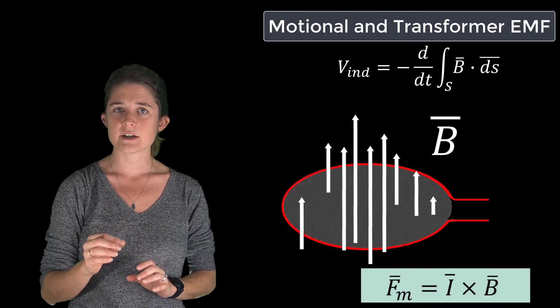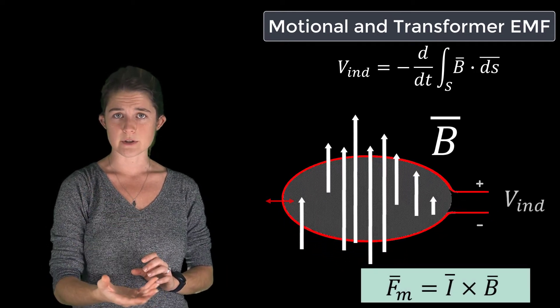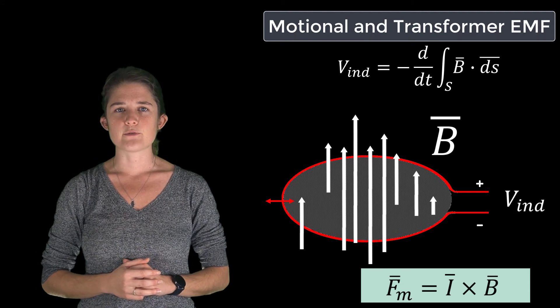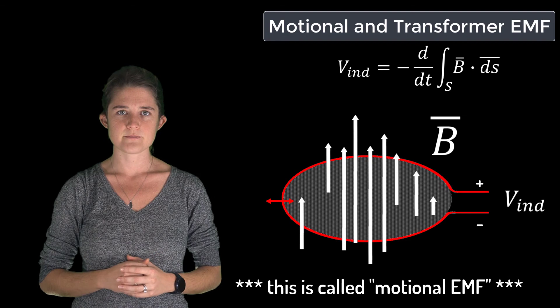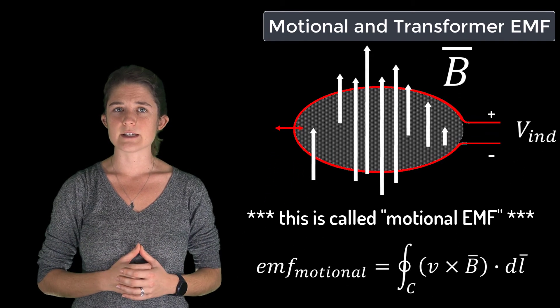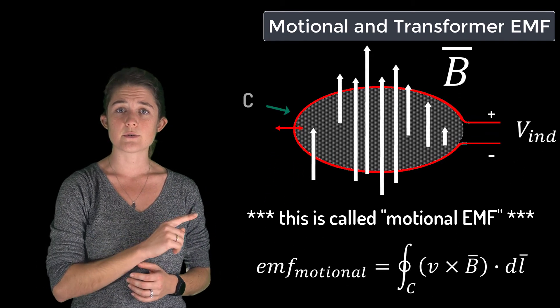force on the moving charges, which in turn produces a voltage. When electromotive force is produced in this way, it is called motional EMF.